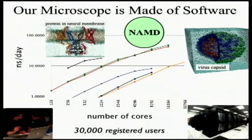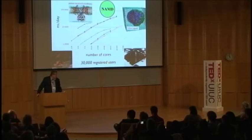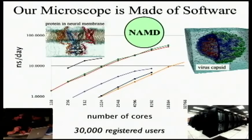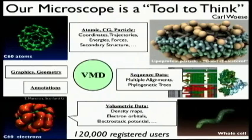Just like Boeing designing its new aircraft, we are simulating with these computers the helicopters, the small planes, and the big planes that are cruising through the cell as molecules. A molecule is very small, yet it takes enormous computer power to simulate them. You see here a small molecule on the left that is generating the electrical signals in nerve cells, and a virus on the right — related to poliovirus — that is infecting human cells. The program is used by 32,000 registered users all over the world.